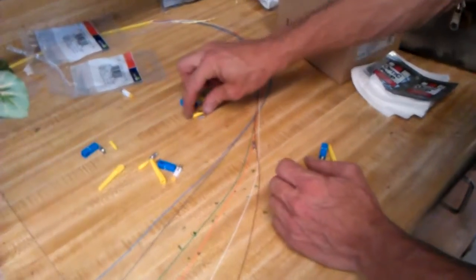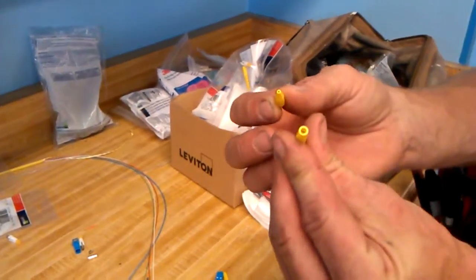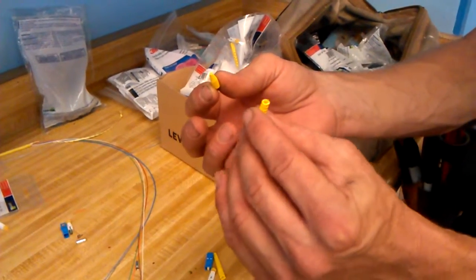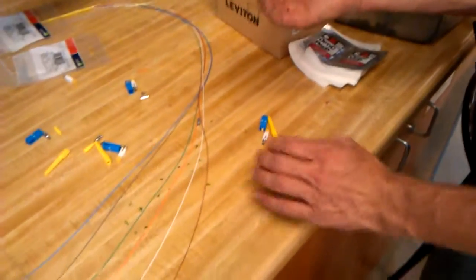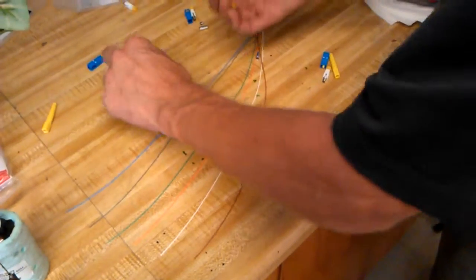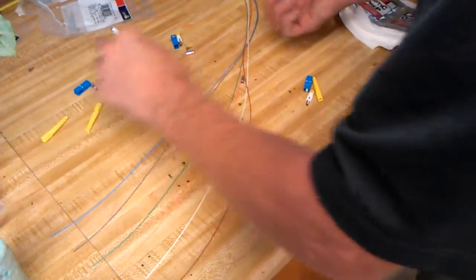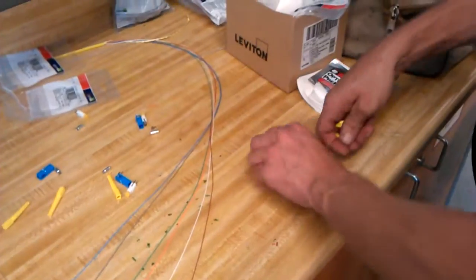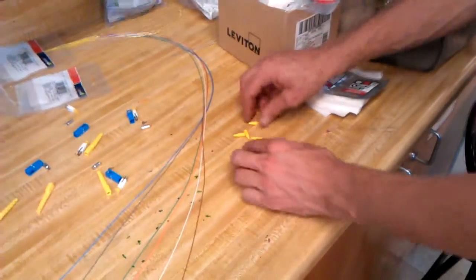First thing you do is take an inventory. I only need this 900 micron boot versus the 3 millimeter boot. This is used for patch cord or simplex cabling with Kevlar already woven into it. This is just bare 900 microns. I'm gonna get all my boots - one, two, three, and number four.